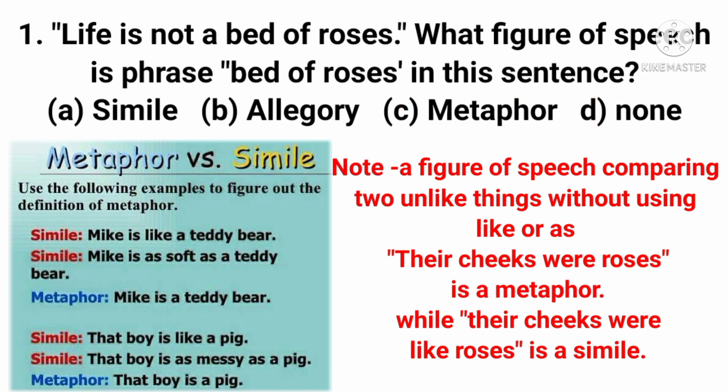For example, 'Their cheeks were roses' — two things are compared: cheeks and roses, but without using 'like' or 'as.' If we say 'Their cheeks were like roses,' that becomes a simile. So the difference between simile and metaphor is important.